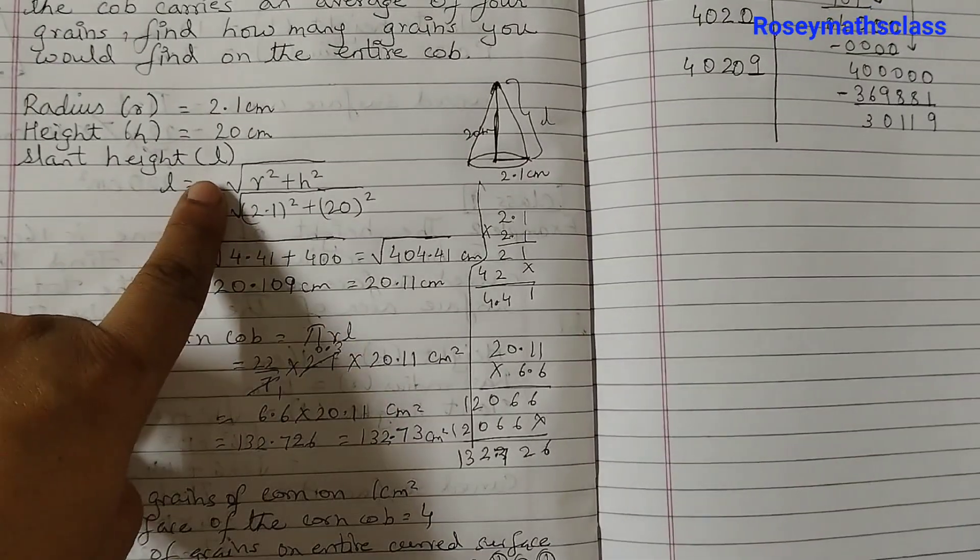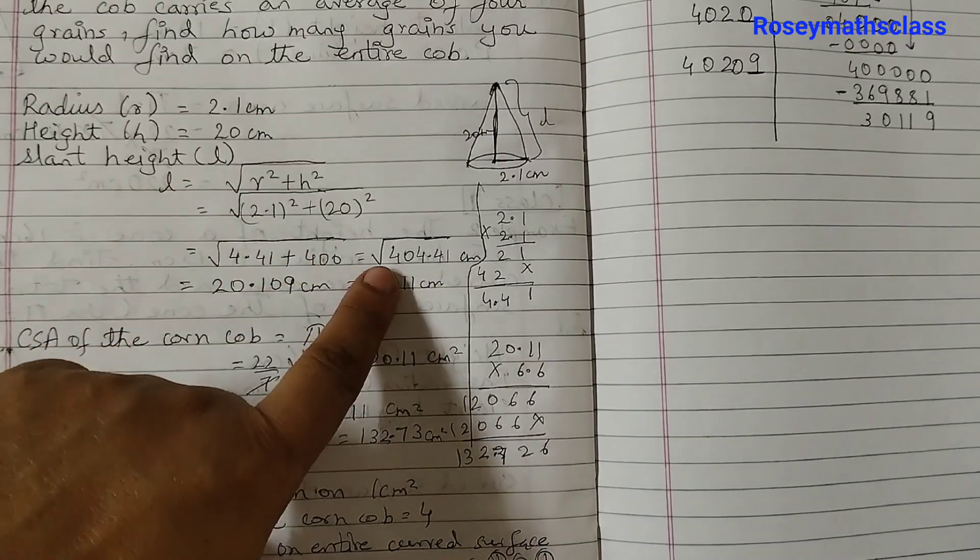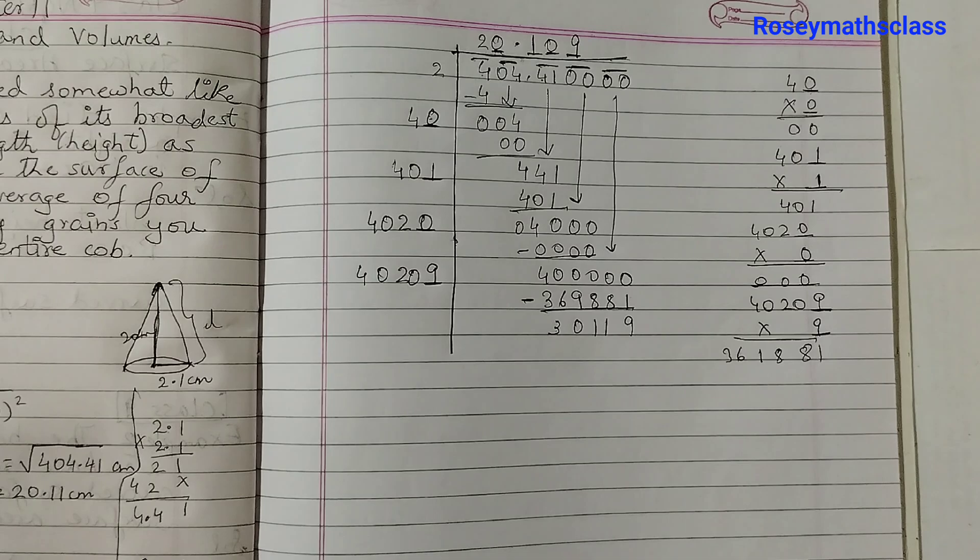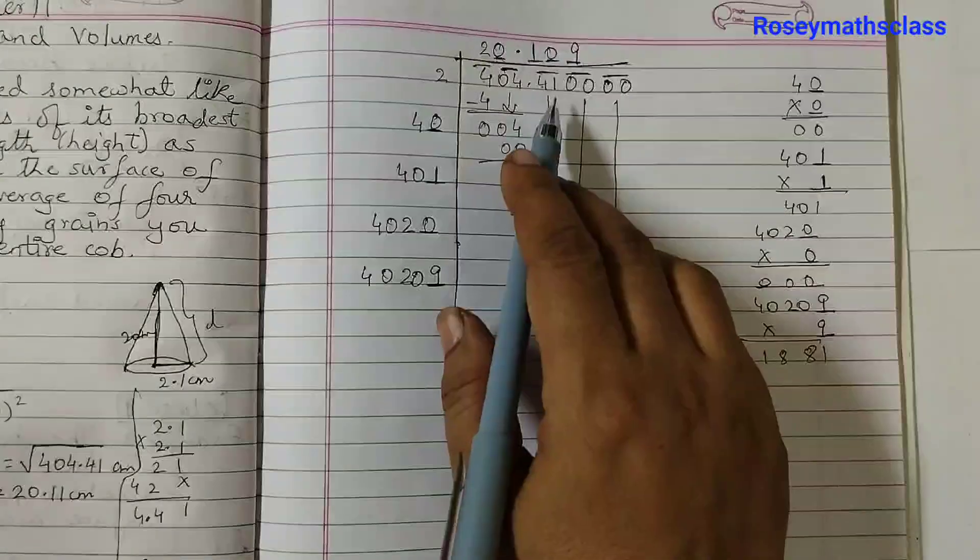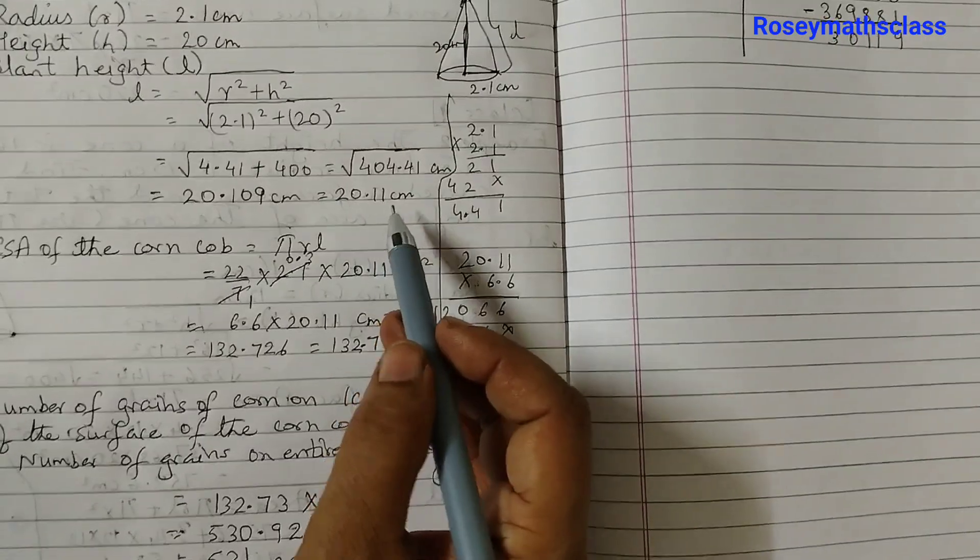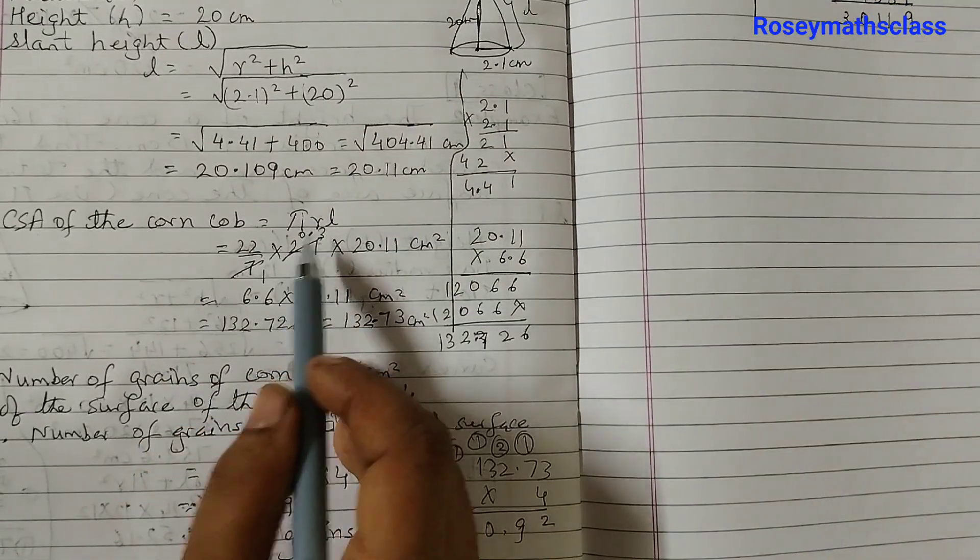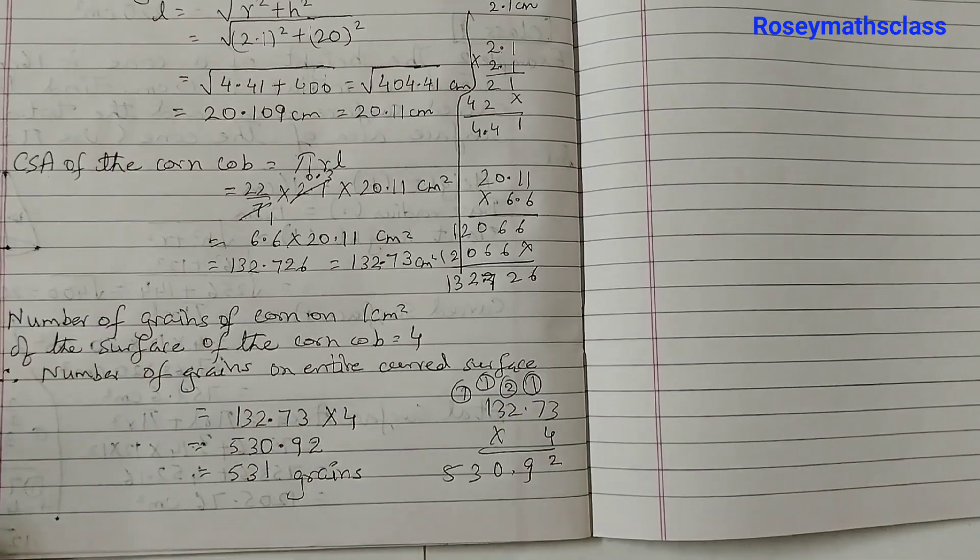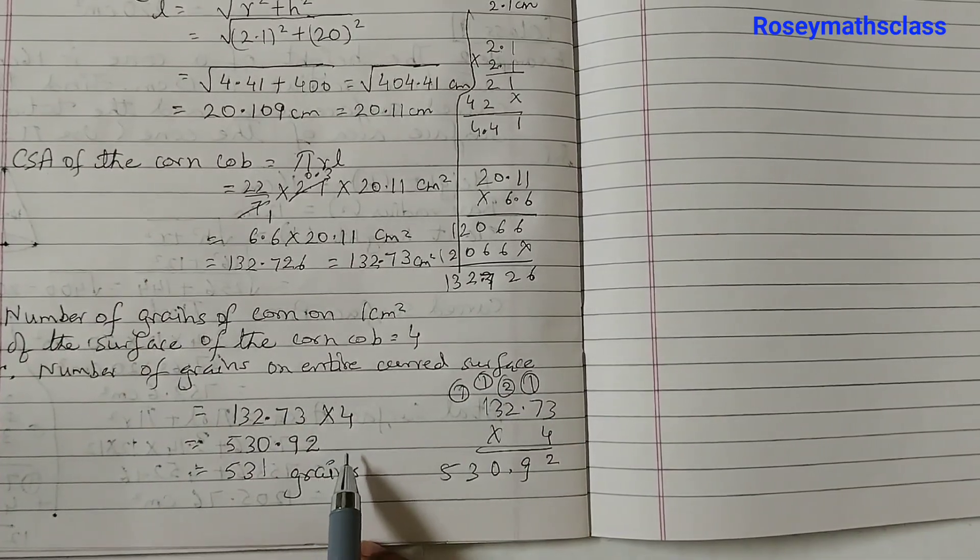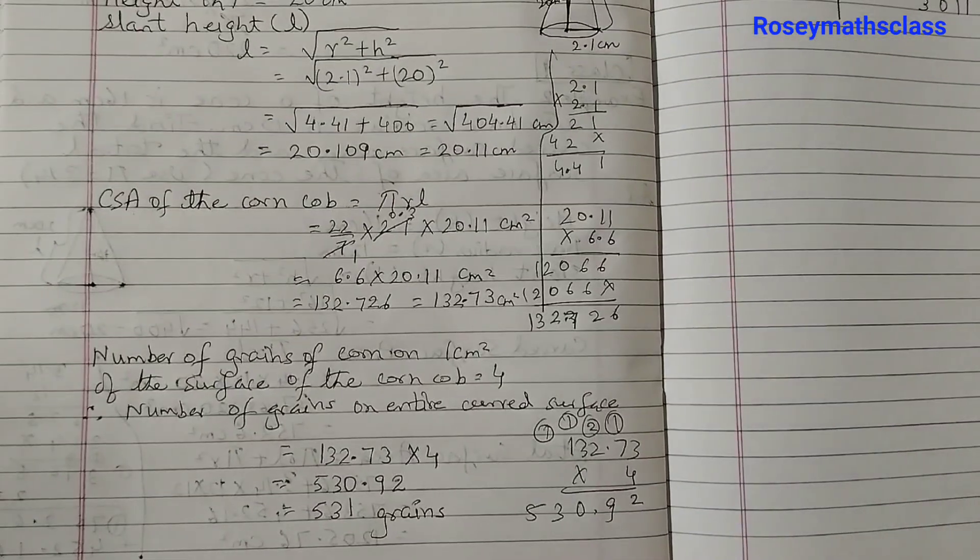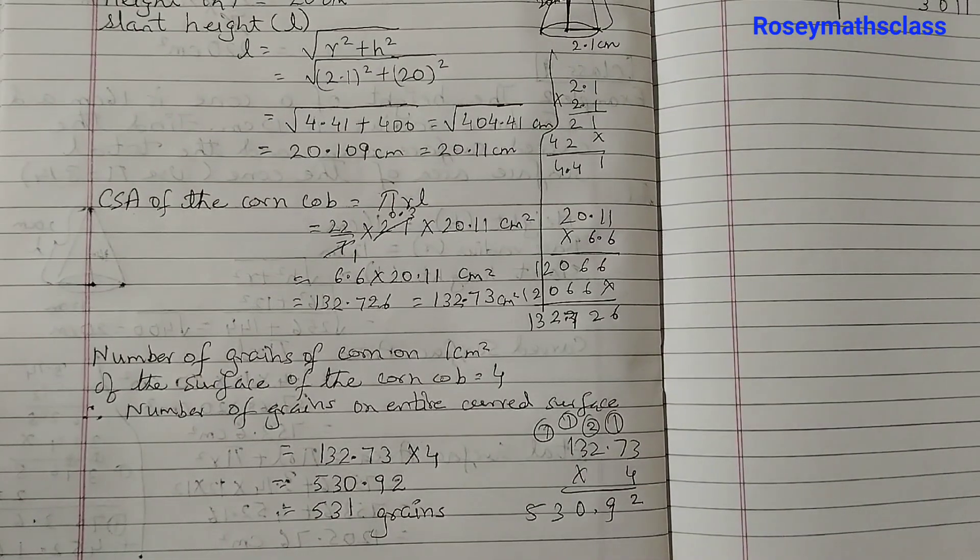So what we did is first we found the slant height which is L and you must know how to do the square root. We found the square root of 404.41 and we got the approximate value as 20.11. Use the formula πRL to find the curved surface area and then multiply the curved surface area by the number of grains which is 4 and that will give your answer. I hope it is clear to all. Thank you.